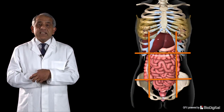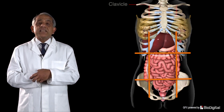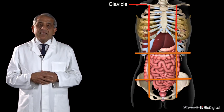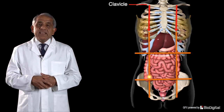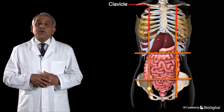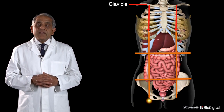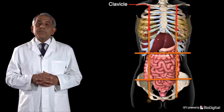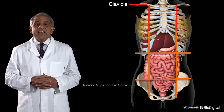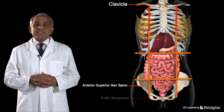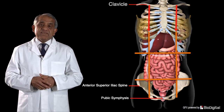The two vertical lines are plotted at the mid-clavicular level and traced inferiorly; these cross the mid-inguinal points. The mid-inguinal point is a point halfway between the anterior superior iliac spine and the pubic symphysis. So that's the two vertical lines done.